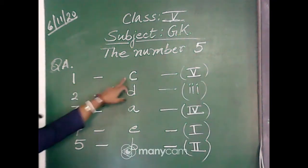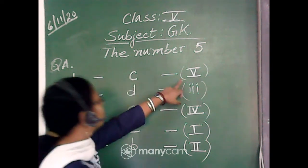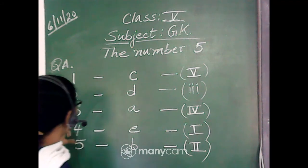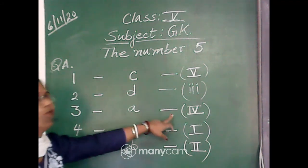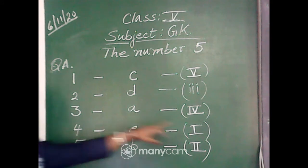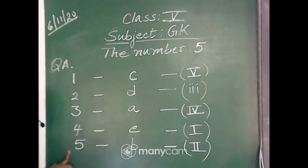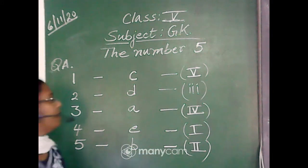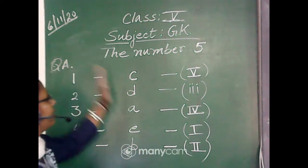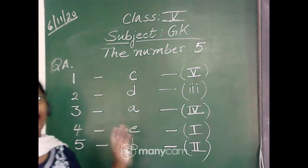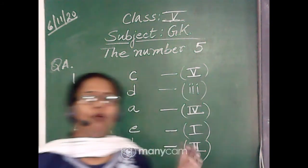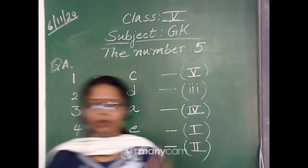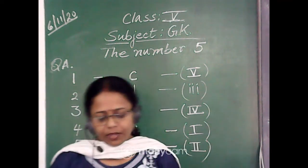So the answers are: number 1 matched with C, Roman 5; number 2 matched with D, Roman 3; number 3 matched with A, Roman 4; number 4 matched with E, Roman 1; and number 5 matched with B, Roman 2. These are the five questions related with five things — religion, sports and nature.